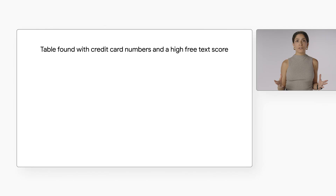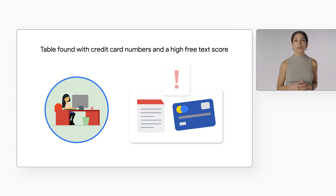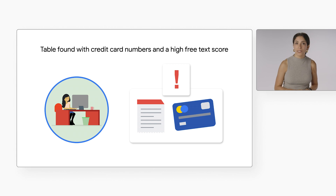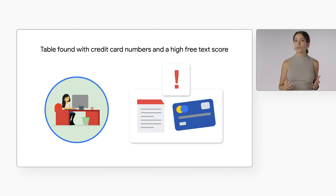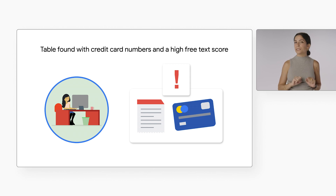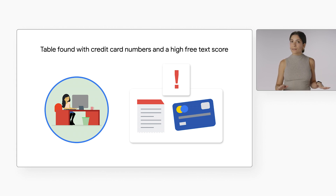Let's take a look at some scenarios. First scenario: a table found with credit card numbers and a high free text score. You just started at your new job on the security team as a data risk analyst and brought in Automatic DLP. You configure profiling for your organization, and the Auto DLP profile results indicate that a column in a table has a high free text score and evidence of credit card numbers and other PII. This means there may be a column of unstructured data with instances of PII — possibly a note or comment field where someone typed in a credit card number instead of a credit card field. This is an indication of potential risk and is likely not something you intended to store.